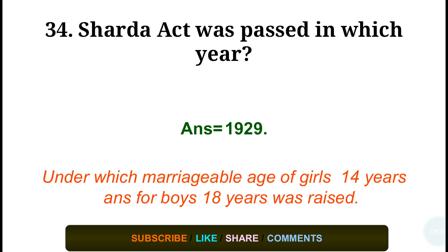Question number thirty-four: The Sharda Act was passed in which year? Answer: in the year 1929, under which the marriageable age of girls was raised to 14 years and for boys to 18 years.